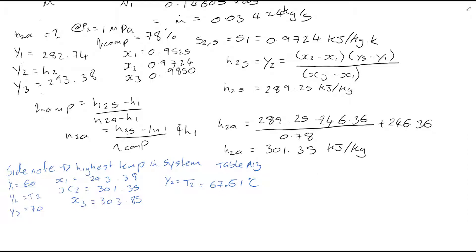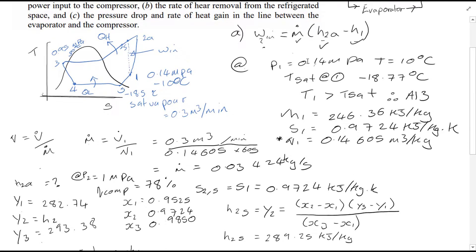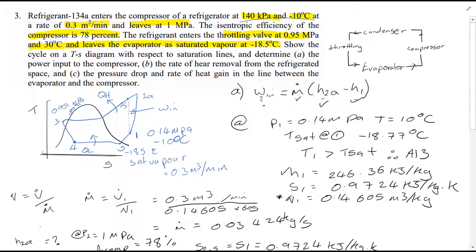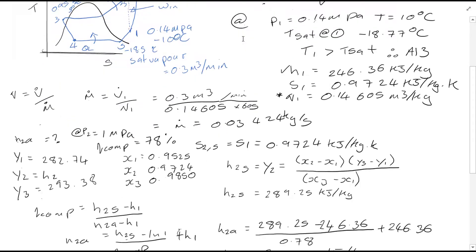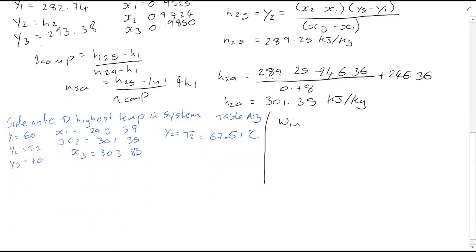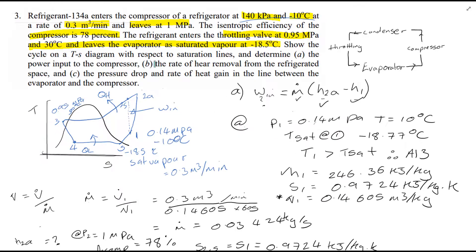Finally, to return back to the question in hand, we're interested in finding work input. So if you scroll up now, you can see that we've actually found all the values that we require. We found the mass flow rate, we found the value of enthalpy at 2 and the value of enthalpy at point 1. So it's just a simple case of plugging in the values that we found.